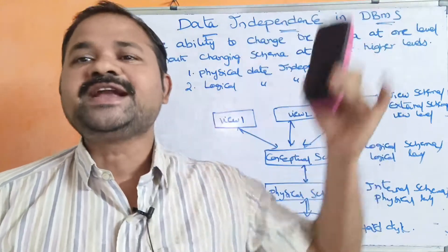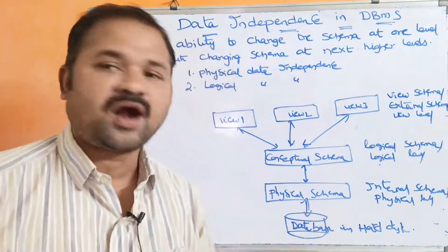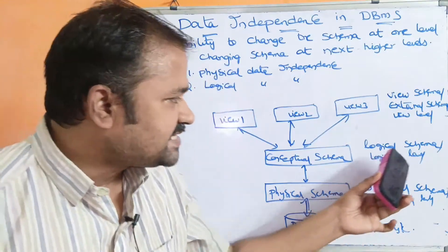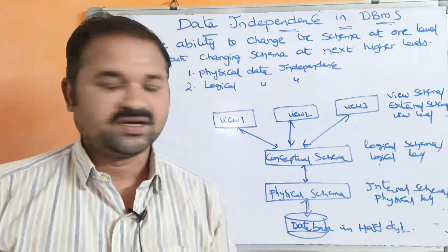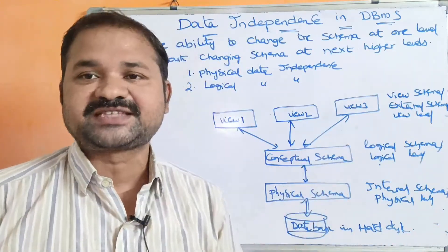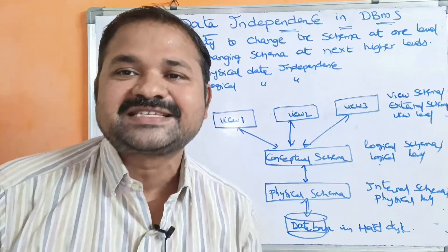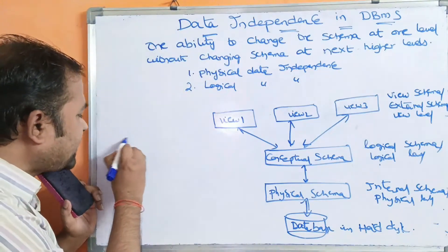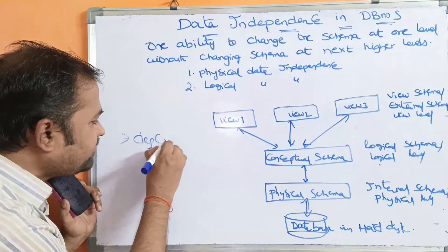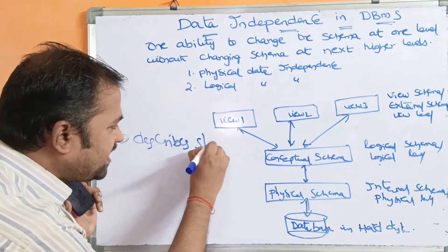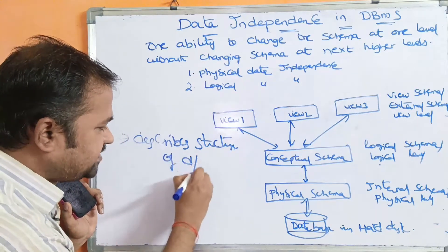In the earlier days, we used magnetic tape, but nowadays we are using hard disk only. The second one is logical schema, also called conceptual schema. Logical schema mainly describes the structure of the database.